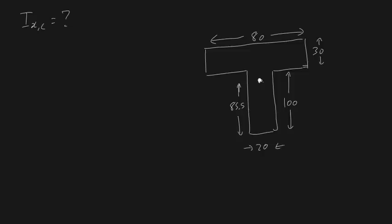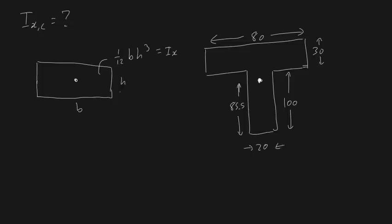Perhaps the most important thing before jumping into calculations is a quick revision on the parallel axis theorem. Recall that for a rectangular box, the moment of inertia about its own center is 1/12 × b × h³, where b is the base and h is the height. This gives us Ix about the centroid of the block.